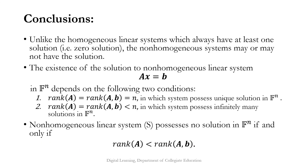Unlike the homogeneous linear system, which always has at least one solution — the zero solution — the non-homogeneous linear system may or may not have a solution. The existence of solutions to Ax = b in Fⁿ depends on two conditions: rank(A) = rank([A|b]) = n gives a unique solution; rank(A) = rank([A|b]) < n gives infinitely many solutions; and rank(A) < rank([A|b]) means no solution exists.